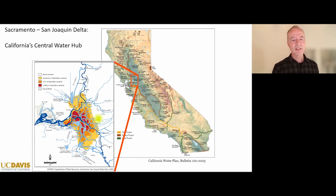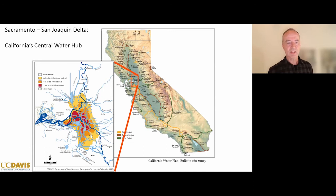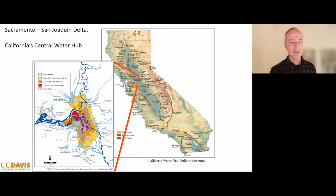To the degree that this ecosystem is protected by environmental laws, we have been working for the last 50 years trying to balance the needs of water users in central and southern California with the needs of the environment, especially here in the delta.